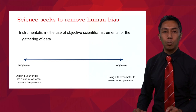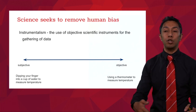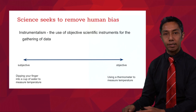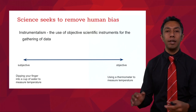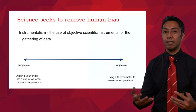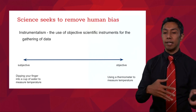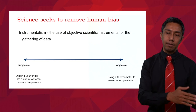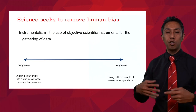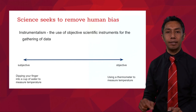We can lay experiments on a continuum from subjective to objective. There are subjective ways of measuring the world and more objective ways. For example, say we're going to take the temperature of a cup of tea — we can either dip our finger in and decide on the temperature, or we can use a thermometer. Dipping your finger is more subjective; using a thermometer is more objective. What we're trying to do is remove the human element from the measurement task, and this is one of the key practices within science.